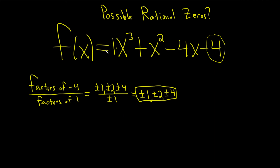It's always last over first. And don't forget, you always should include a plus or minus for every single number no matter what. Then just divide: 1 over 1 is 1, 2 over 1 is 2, 4 over 1 is 4.